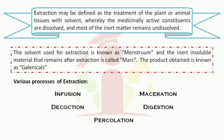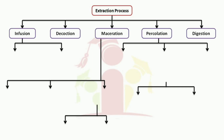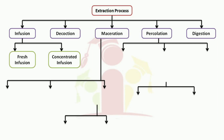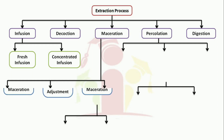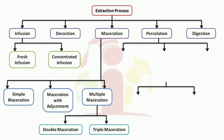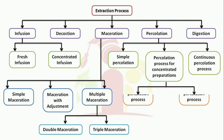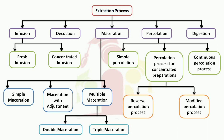Various processes of extraction are infusion, maceration, decoction, digestion and percolation. Infusion can be further classified into fresh infusion and concentrated infusion, whereas maceration can be further classified into simple maceration, maceration with adjustment, and multiple maceration. Multiple maceration can again be further classified into double and triple maceration. Percolation can be classified into simple percolation, percolation process for concentrated preparations, and continuous percolation process. Percolation process for concentrated preparations can further be classified as reserved percolation process and modified percolation process.